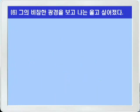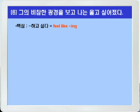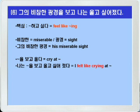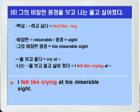이제 마지막 6번을 할 차례죠. 그의 비참한 광경을 보고 나는 울고 싶어졌다. 핵심이 그냥 나오죠. '뭐뭐 하고 싶다' — 'feel like -ing'를 쓰면 됩니다. '비참한'은 miserable을 쓰고 '광경'은 sight를 쓰면 됩니다. 그래서 '그의 비참한 광경'은 'his miserable sight' 이렇게 쓰면 되겠죠. '뭐뭐를 보고 울다'는 'cry at'을 쓰면 됩니다. 'feel like'를 쓰면 되는데 과거니까 felt를 써서 'I felt like crying at' 이렇게 쓰면 되겠습니다. 정답: 'I felt like crying at his miserable sight.' 자 이것으로 우리가 51쪽의 모든 내용을 다 마쳤습니다. 매번 강조하는 것이지만 복습은 하루가 가기 전에 꼭 해야 효과가 있습니다. 그럼 다음 시간에 오늘도 행복한 하루 되시길 바랍니다. 감사합니다.